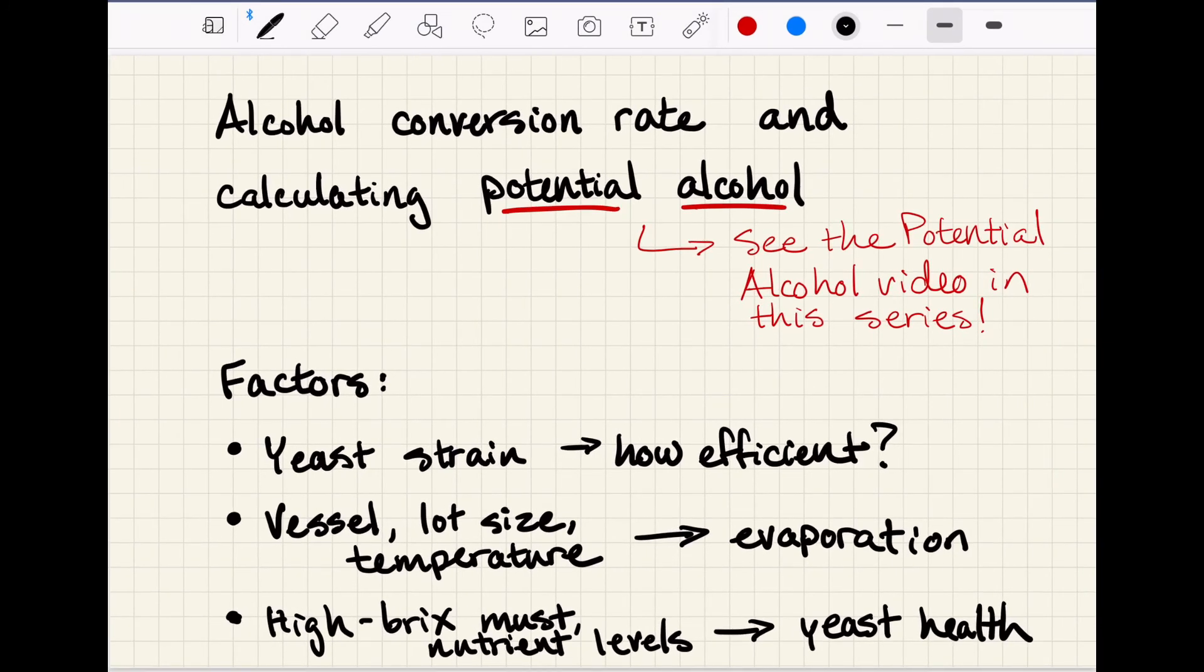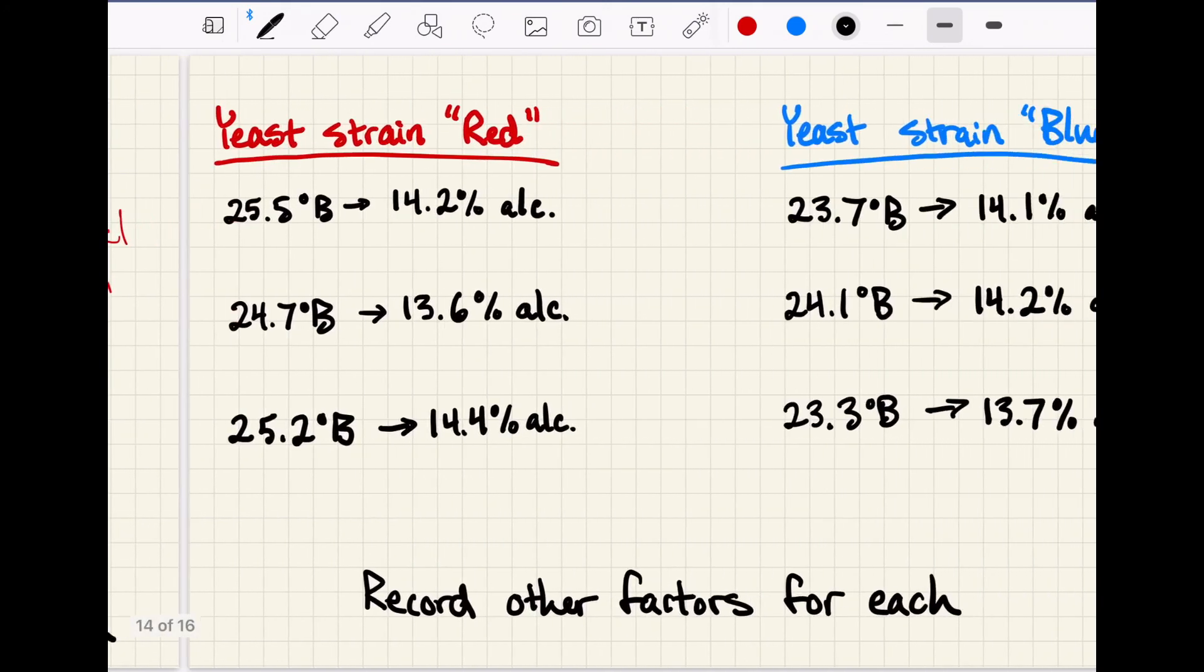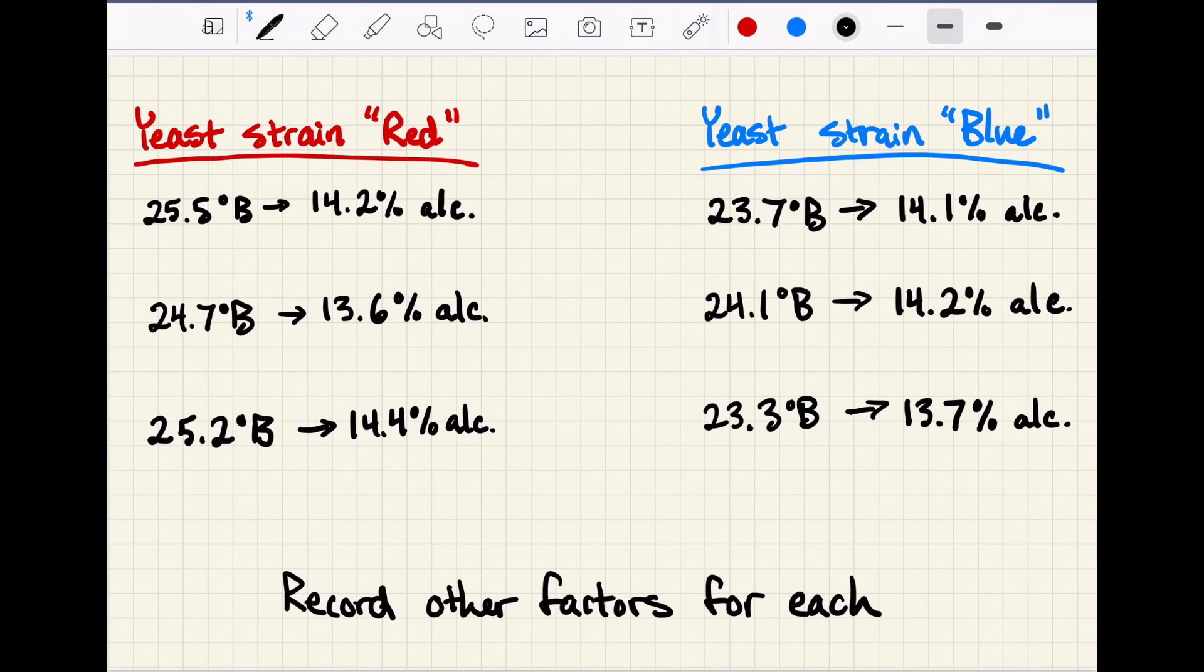Since we've talked about the change in bricks over time, we can also talk about something else that changes as bricks changes, which is alcohol. There's a video in this series that looks at potential alcohol, and discusses the conversion rate of sugar to alcohol, so please check that video out as well. We typically use a ballpark conversion estimate when calculating potential alcohol, but that rate will vary depending on things like the yeast strain, the fermentation vessel, and the chemistry of the must.